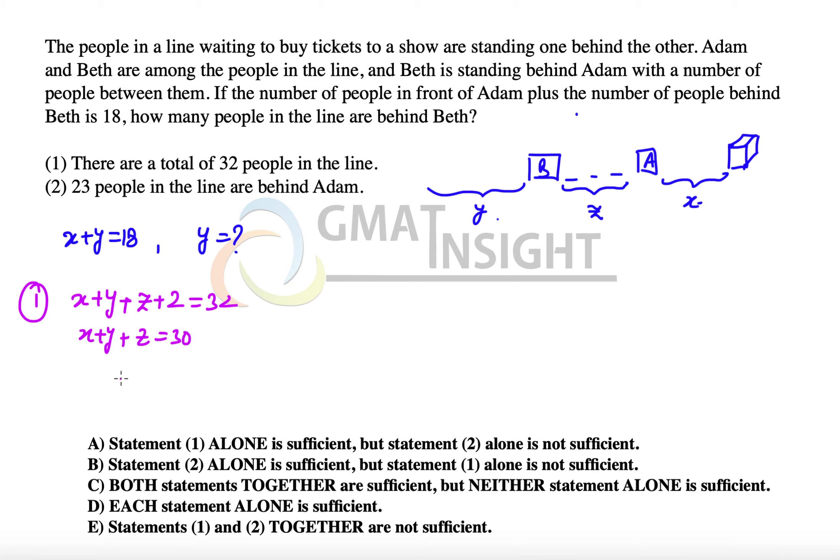And since we know x plus y is 18, so we can say z is equal to 30 minus 18, which is equal to 12. But we cannot find the value of y. Therefore, we say that the first statement alone is not sufficient to answer the question, and we can eliminate option A and option D.